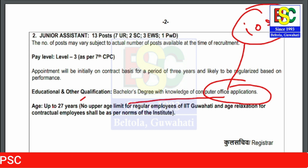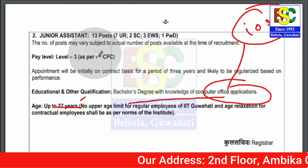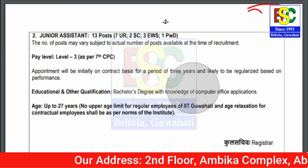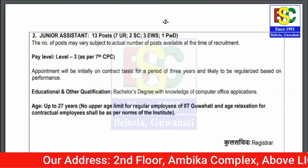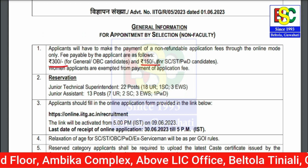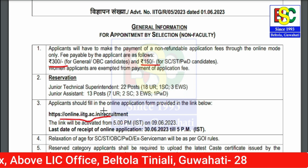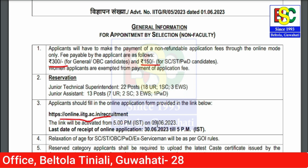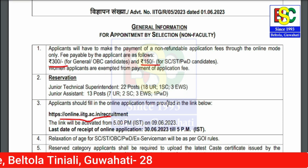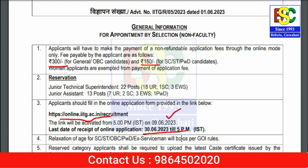The age limit is 27 years. There is age relaxation for IIT employees and contractual employees. The application fee is ₹300, and ₹150 for SC/ST candidates. Apply online on the IIT Guwahati portal. The last date to apply is 30 June.